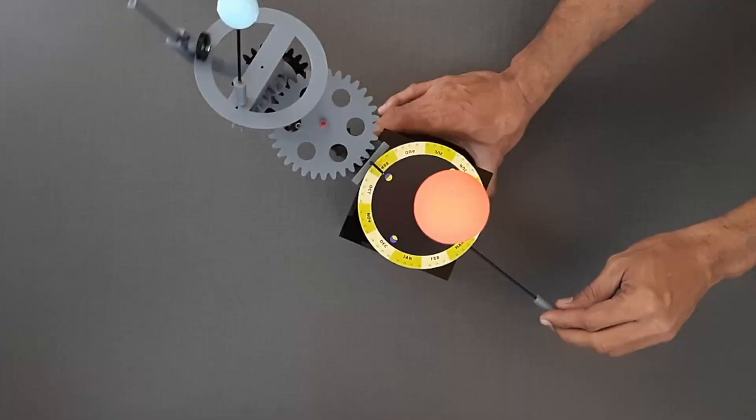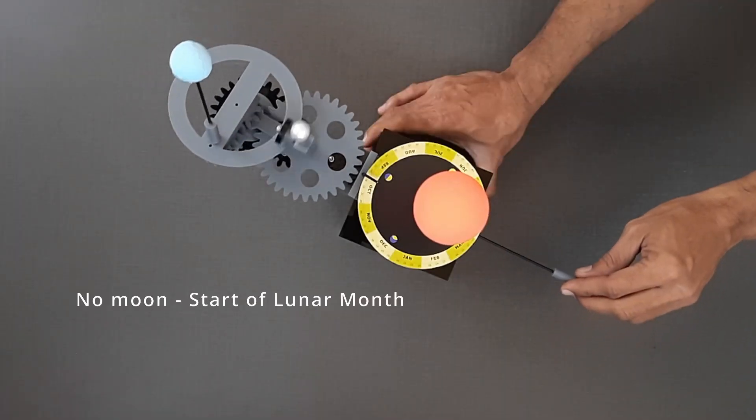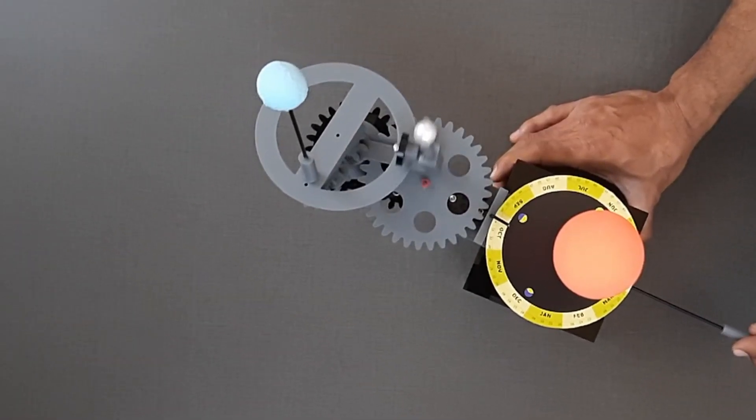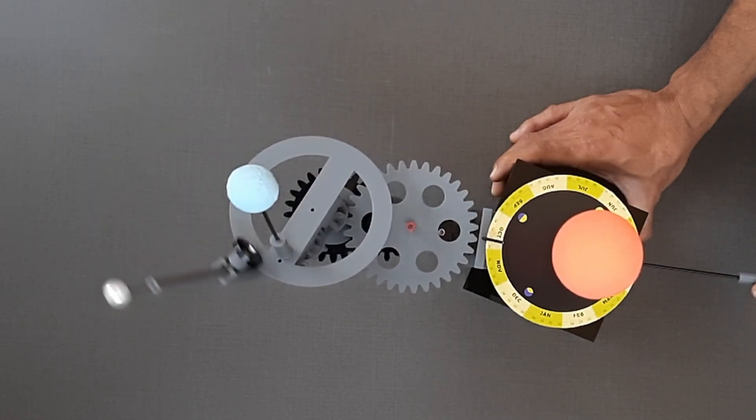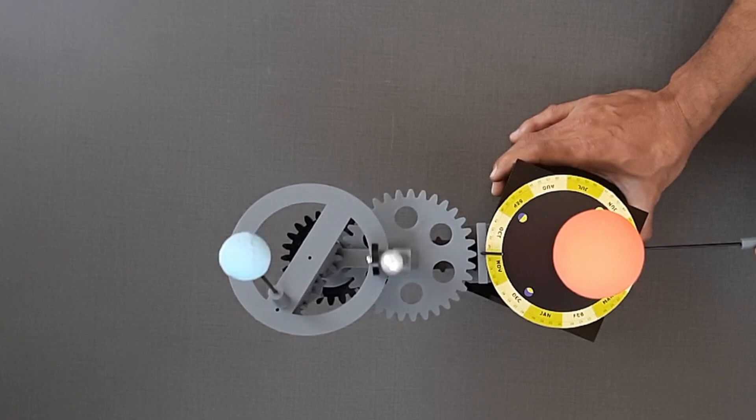Position of the Moon on No Moon Day as well as Full Moon Day can also be shown with the help of the model. Moon completes one revolution in 30 days.